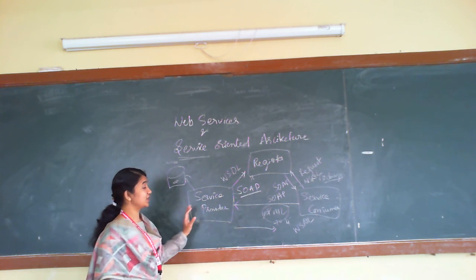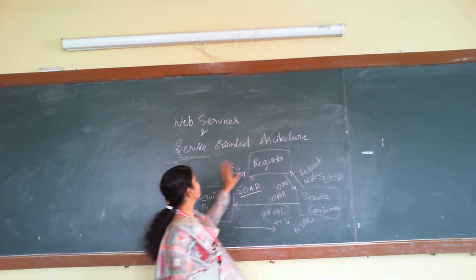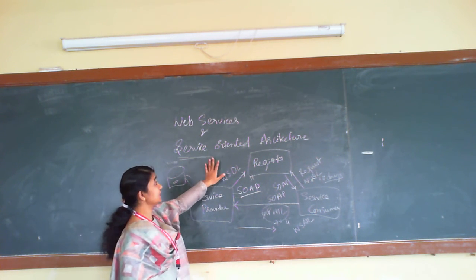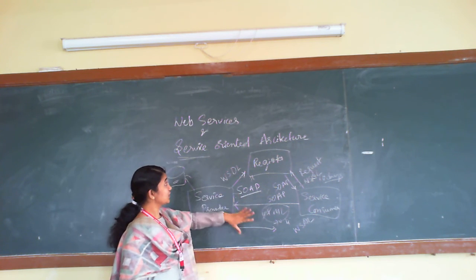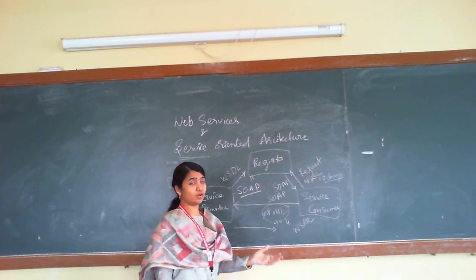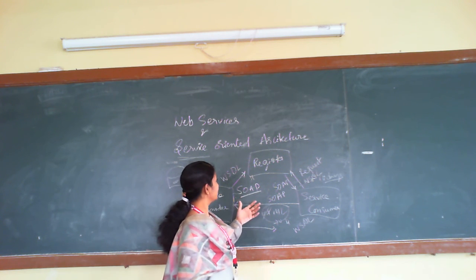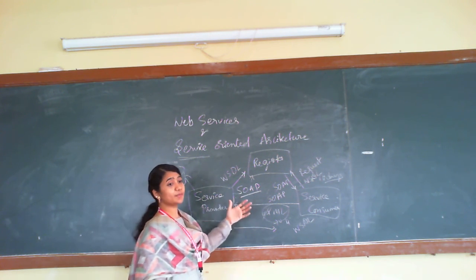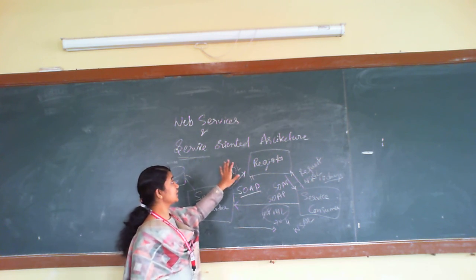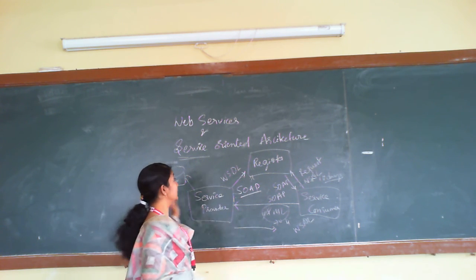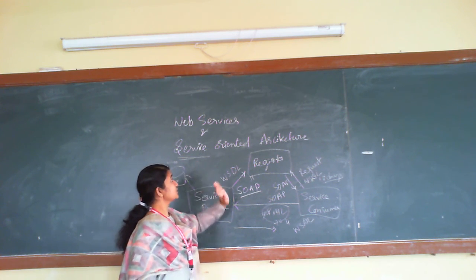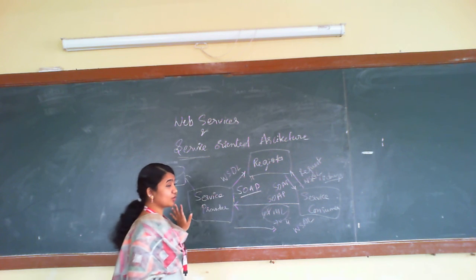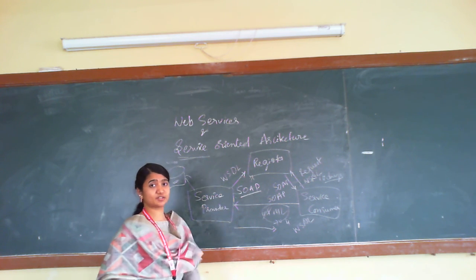This is all what happens. This is called a web service framework and this is the heart of service oriented architecture. Whatever web services are being developed, we develop them on the basis of service oriented architecture only. We can tell that web services are the implementation of service oriented architecture and this is the framework of web service architecture. Thank you.